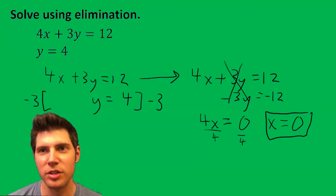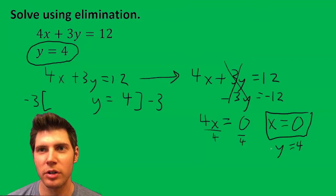And we already know what y equals because it was isolated here. So we can just say y equals four. And so our final answer is zero comma four.